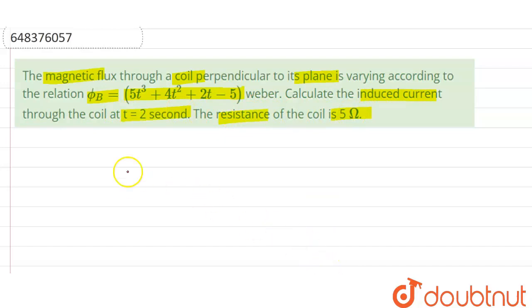So here we are given the value of φ, that is magnetic flux through the coil. It is equal to φ = 5t³ + 4t² + 2t - 5 Weber. We are given time equal to 2 seconds and resistance R of the coil is 5 Ohm.